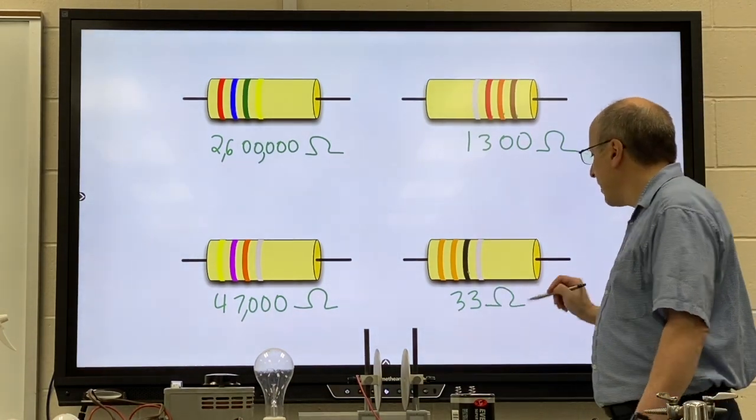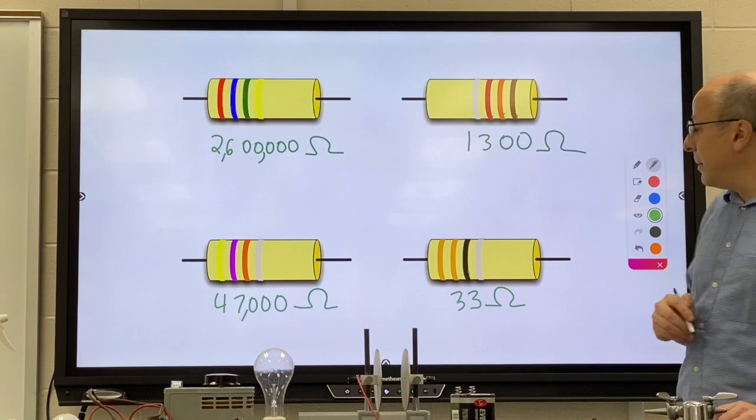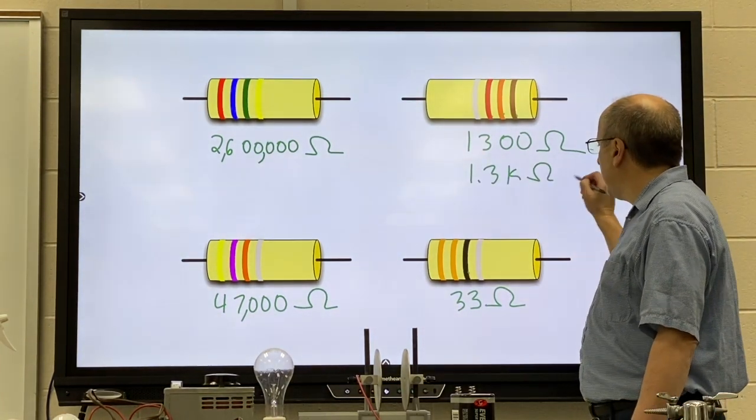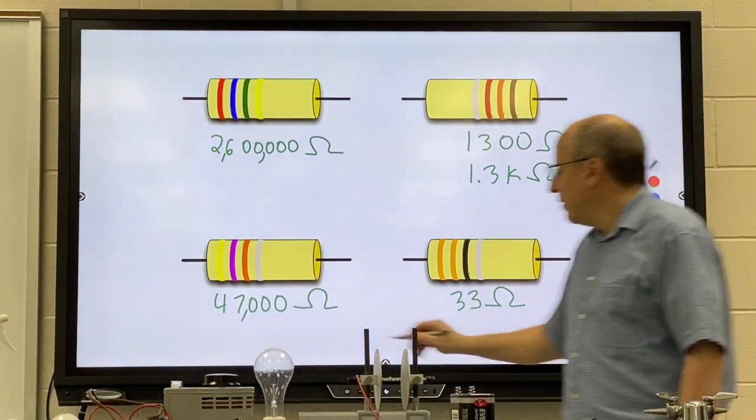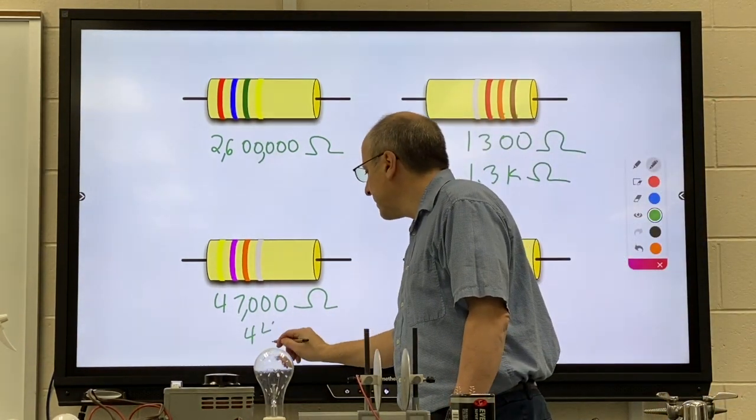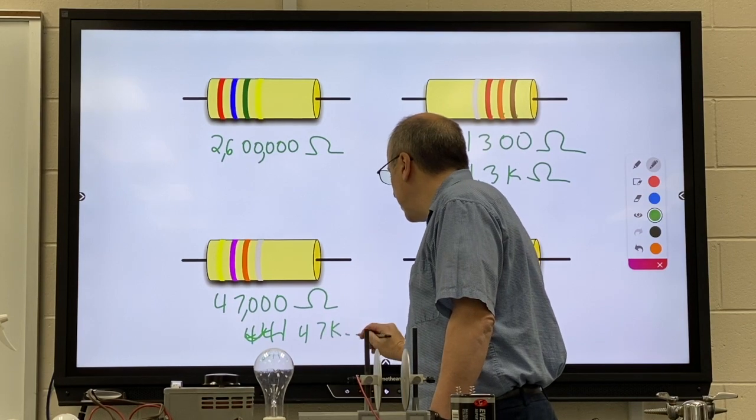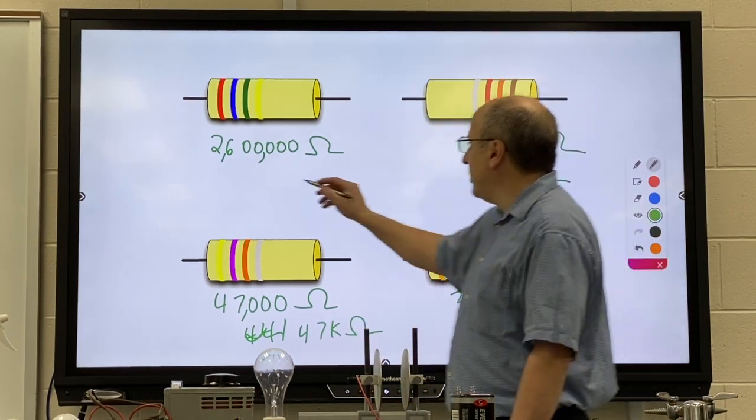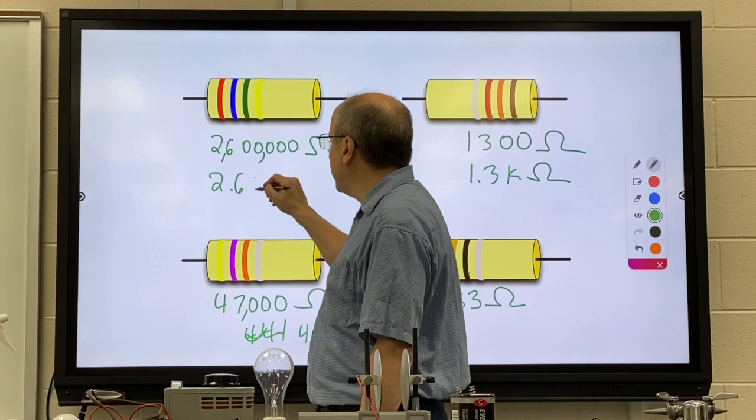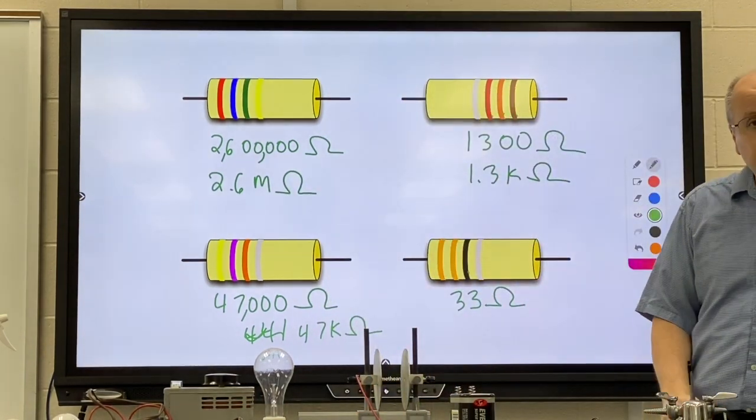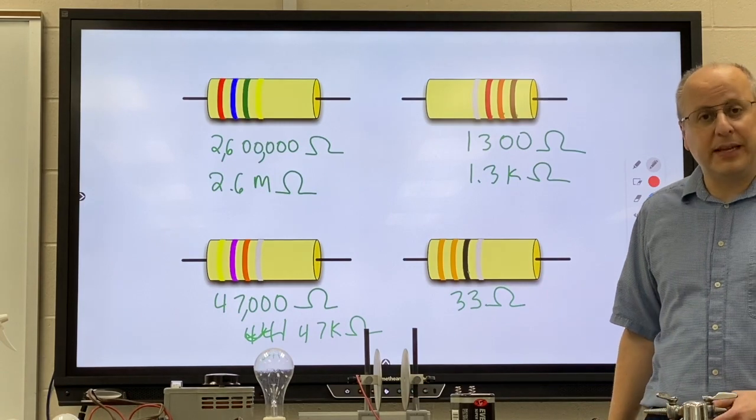And here with black, be careful, it's three, three, and then no zeros. So it's just 33. For bigger resistors, sometimes people will write them like 47 kilo-ohms. And this one, 2.6 mega-ohms. You don't have to put the metric prefix, but it sure does make things easier.